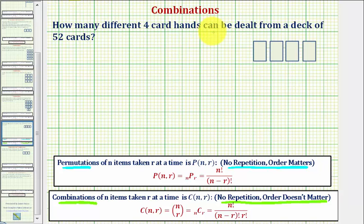To illustrate this, let's say we were dealt this four card hand. Now if we change the order of these four cards, does it change our hand? Well, the answer is no. If we change the order of these four cards, we still have the same four cards in our hand, and therefore the order does not matter.